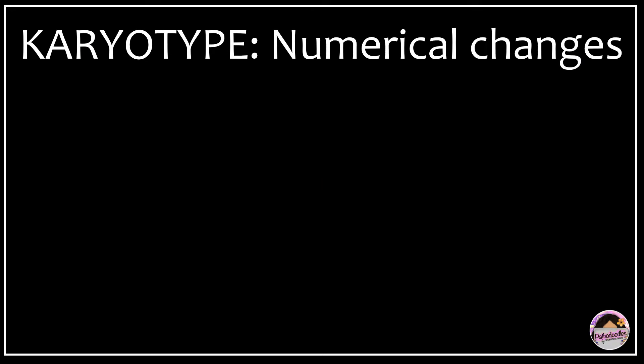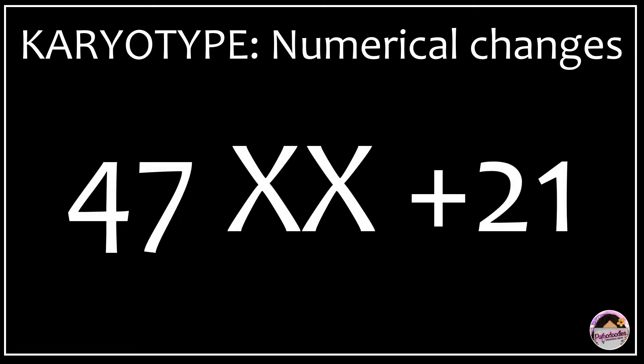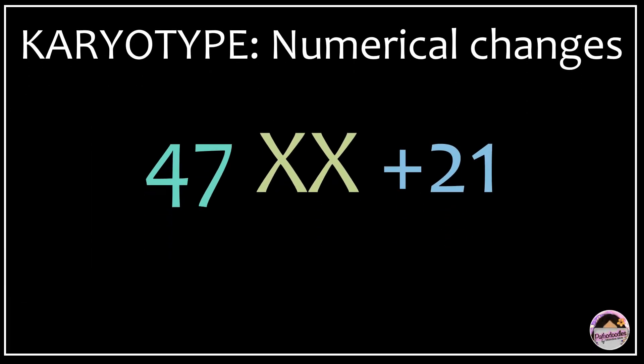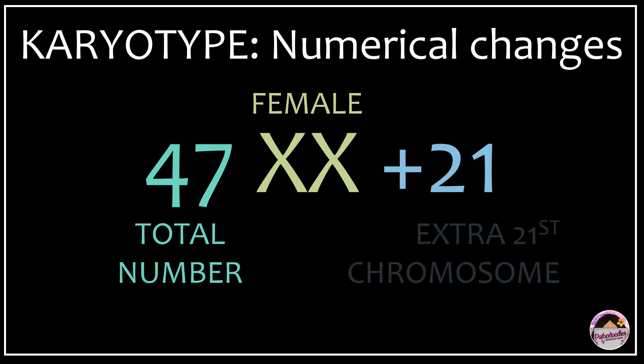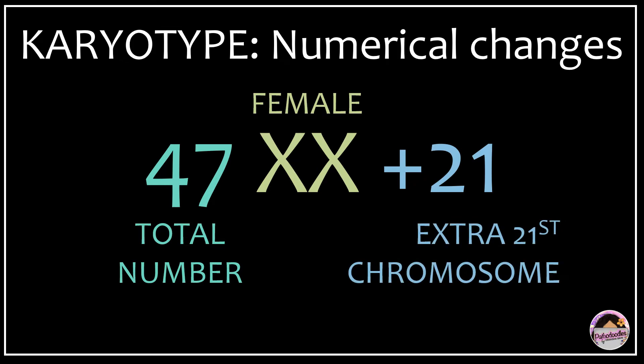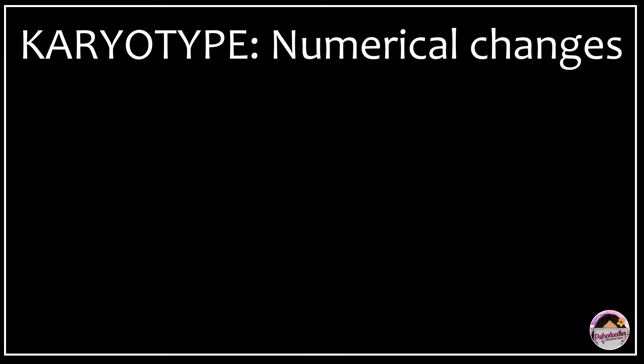Now let's look at a karyotype, which can be used to give information about numerical or structural changes. First, let's talk about numerical changes. Take 47,XX,+21 — what does this mean? 47 is the total number of chromosomes; it's a female patient who has an extra 21st chromosome. The diagnosis of course is Down syndrome.